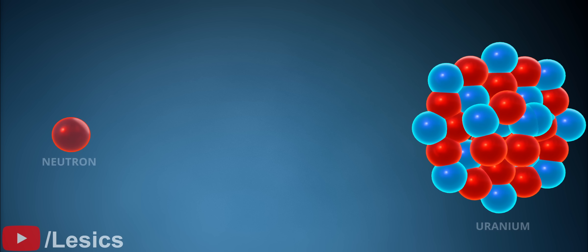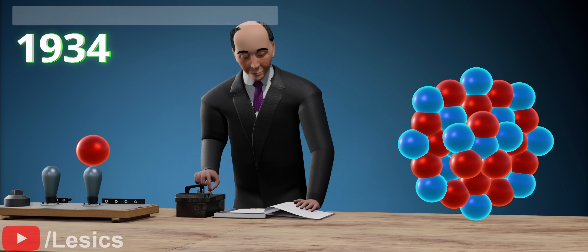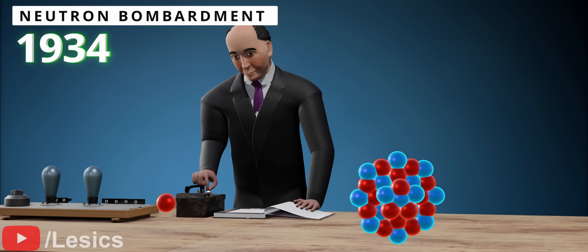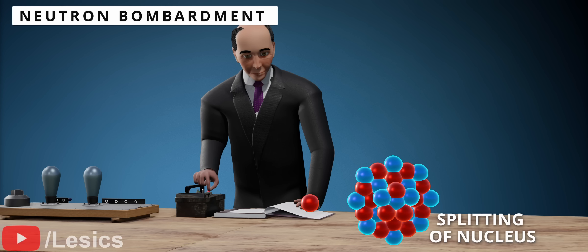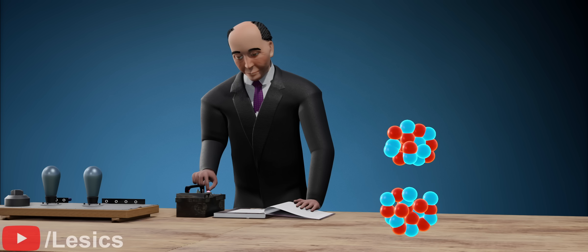What if we use chargeless neutrons as a knife? This is exactly what the great Italian scientist Mr. Enrico Fermi did in Rome. Using neutron bombardment, he was able to successfully split uranium atoms into two parts. This was a huge accomplishment in physics, for which he won a Nobel Prize.